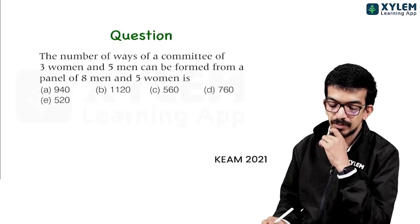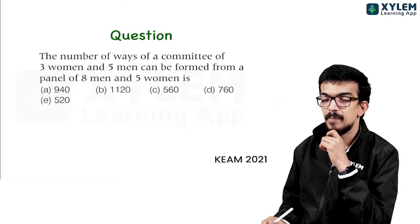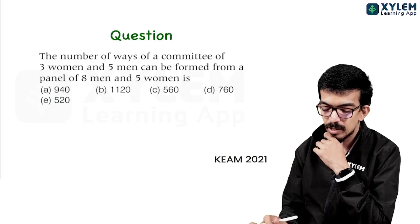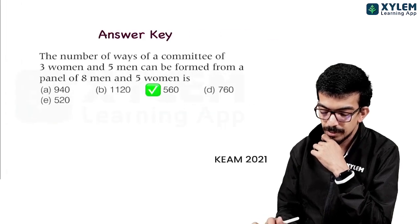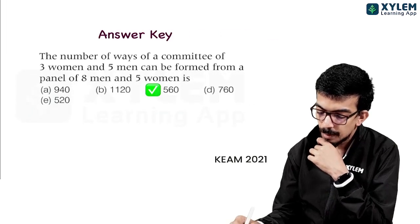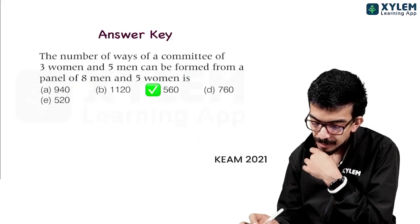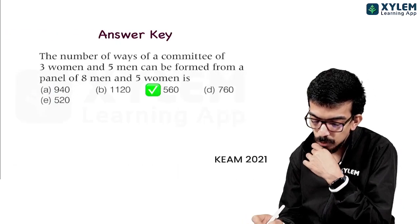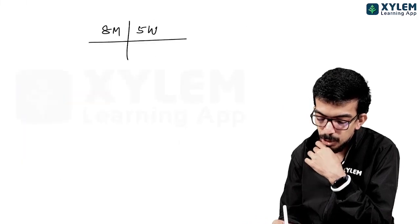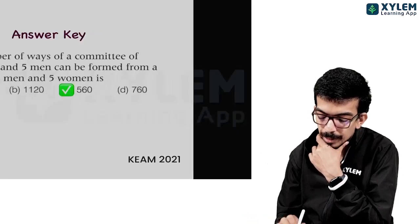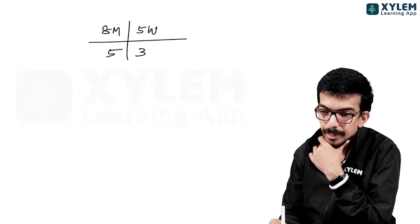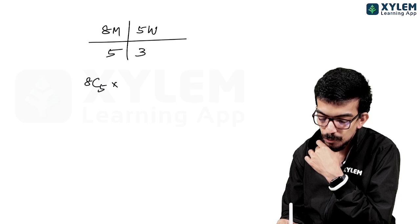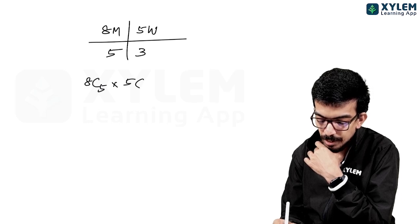Next question. The number of ways a committee of 3 women and 5 men can be formed from a panel of 8 men and 5 women is. We choose 5 men from 8 and 3 women from 5, so the answer is 8C5 into 5C3.